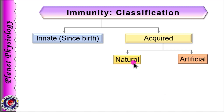In contrast, if pathogens are introduced into the body to activate the immune system, as done during vaccination or immunization process, it forms artificially acquired immunity.